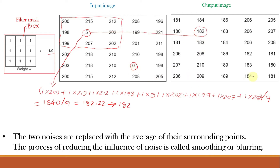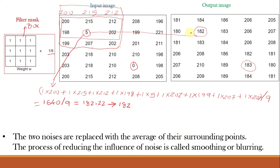When the mask is at the border of the image and some positions fall outside, we can replicate the neighboring values to fill those blank positions. For example, border values like 200, 215, and 212 are replicated for the blank positions. In the output image, the two noise points — the dark or black pixels with values 5 and 0 — are replaced with the averages of their surrounding points, becoming 182 and 183 respectively. This process of reducing the influence of noise is called smoothing or blurring, and is known as low pass filtering.